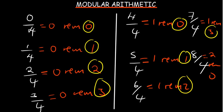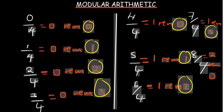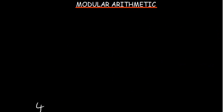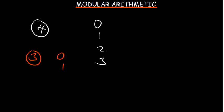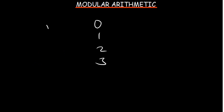Whenever you're dividing a number, if you're dividing by 4 the remainders trend as 0, 1, 2, and 3. If you are dividing by 3, your trend is going to be 0, 1, and 2, because whenever it gets to over 3 that becomes a factor which resets to 0 again. That's the way the trend moves.